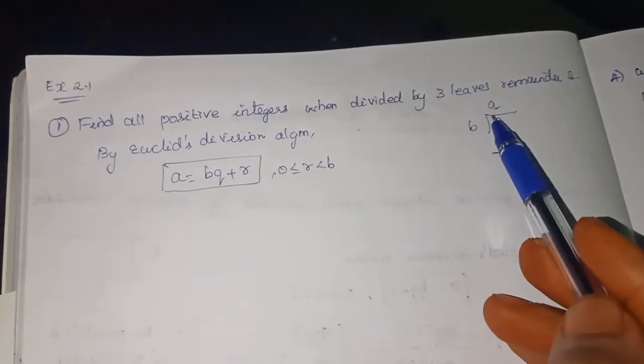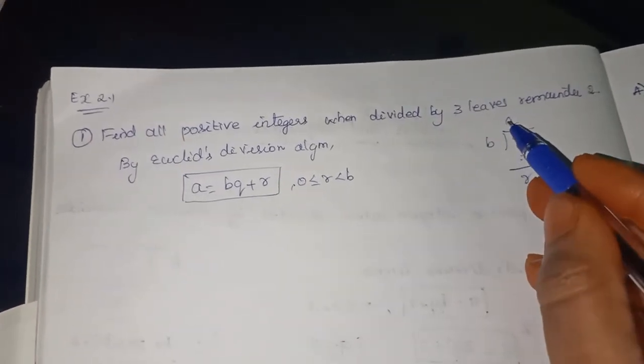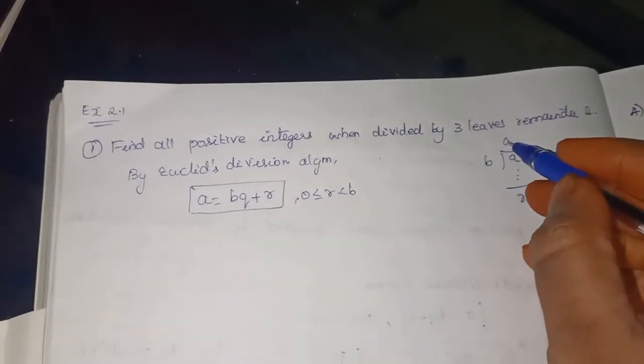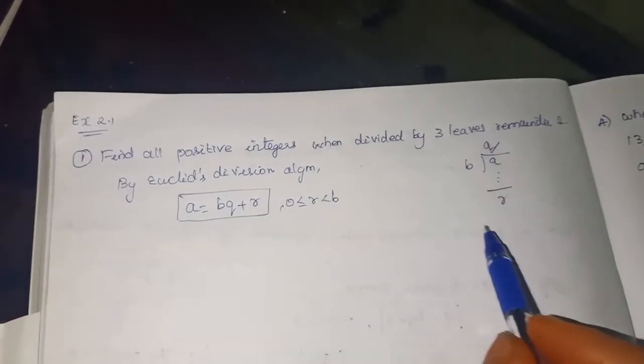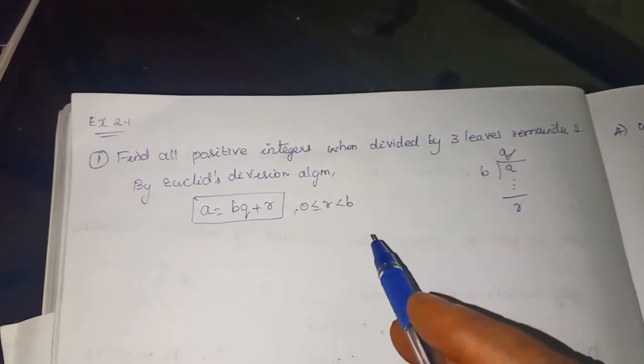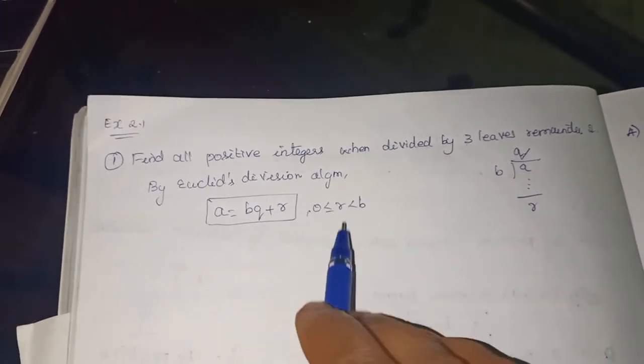Dividend is equal to divisor into quotient. Divisor is what? B. Into quotient. This is Q. Quotient plus remainder. Plus remainder, we write using division algorithm. Same like that. This equals division algorithm.